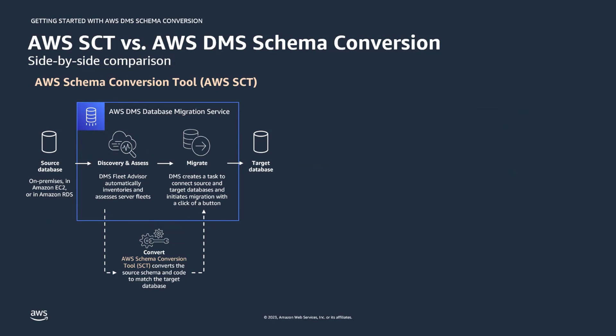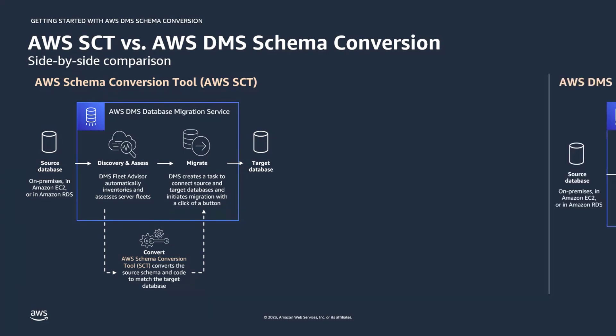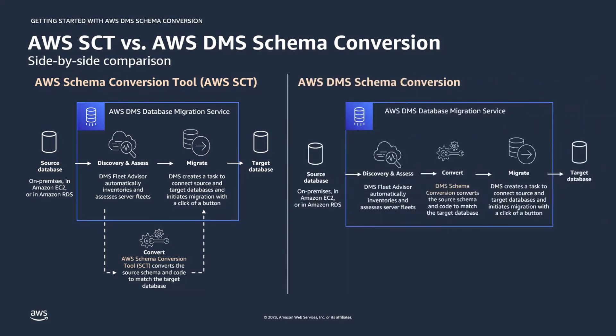Because AWS SCT is locally installed and lives outside of DMS, customers have to move back and forth between DMS and this external tool to complete a migration. With the launch of DMS Schema Conversion, DMS now provides SCT functionality integrated into DMS as a fully managed capability, offering an end-to-end database migration solution under one centrally managed service. This makes it simpler and faster to plan, assess, convert, and migrate to the cloud, reducing manual pre-migration tasks from weeks or months down to hours.